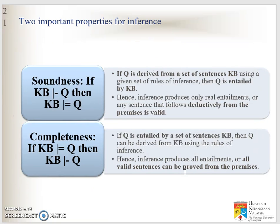There are two important properties for inference. The first is soundness. If Q is derived from a set of sentences in the knowledge base using a given set of rules of inference, then Q is entailed by the knowledge base. So if you can get Q from a set of sentences, that means Q is entailed by the knowledge base.